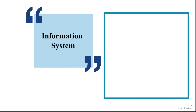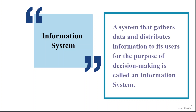Before we understand MIS, let us first understand what is an information system in general. By definition, any information system gathers some data and then processes that data to create information out of it. This information is then used for making decisions.